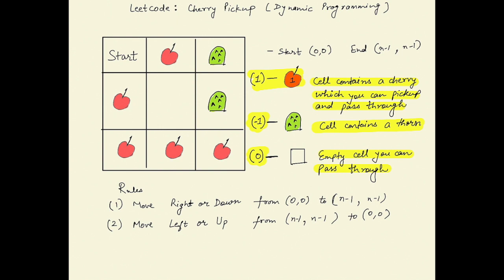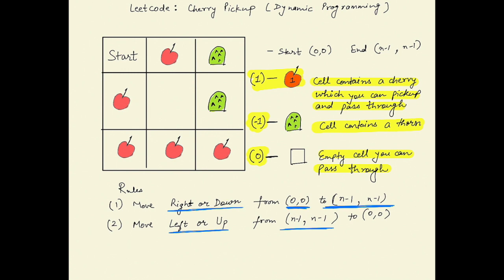Your ultimate goal is to maximize the amount of cherries you can collect, following certain rules. The first rule is that you start from position (0,0) and can move either right or downward, until you reach (n-1, n-1). After reaching (n-1, n-1), you can move either left or up, and return from (n-1, n-1) back to your starting position (0,0).